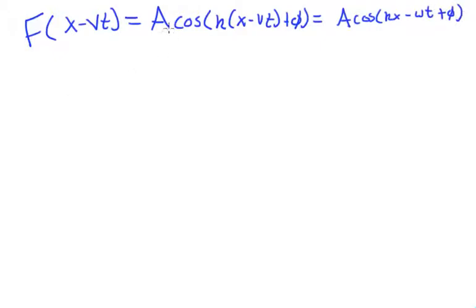We need two free parameters because it's a second order differential equation. That's what the phi and the amplitude A are for. And if you also notice something special we did was we factored in this k, and what we did is we defined that k times v equals omega, or you could say that v equals omega over k.